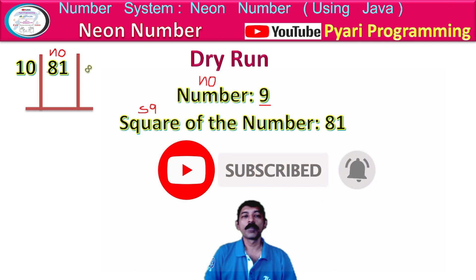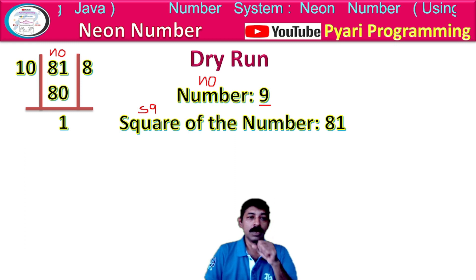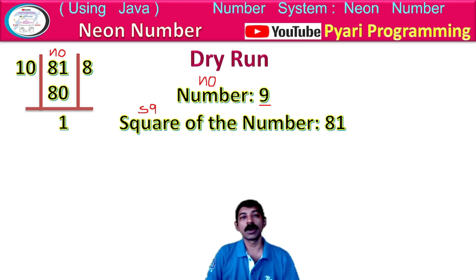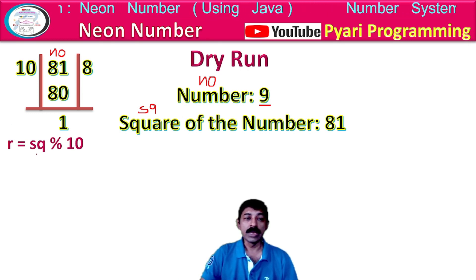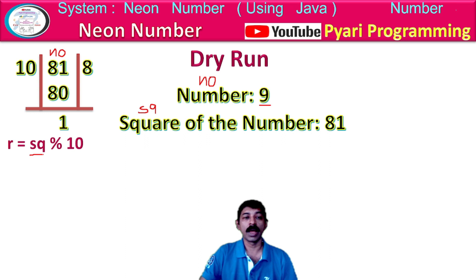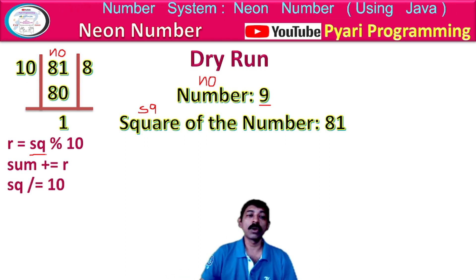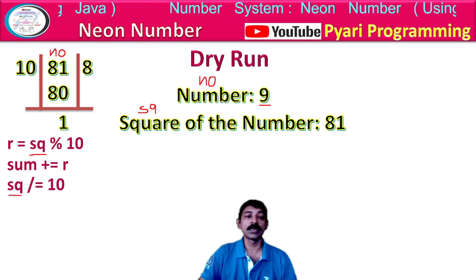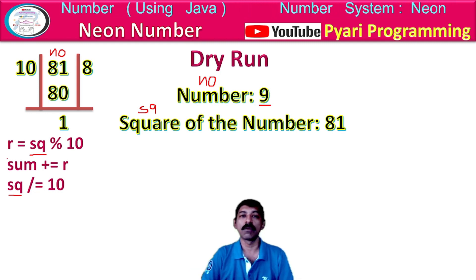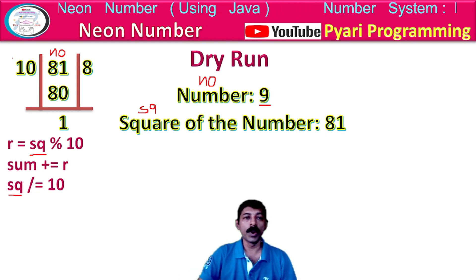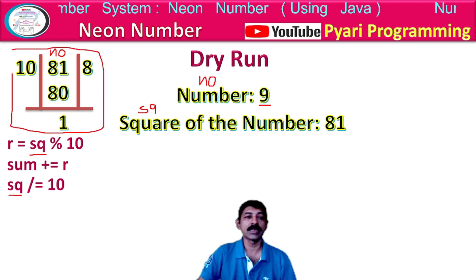Now I divide sq by 10. I get remainder 1 using: r = sq % 10. Then sum = sum + r, and sq = sq / 10. The sum is now 1 because remainder is 1 and sum was initially 0, so 0 + 1 = 1. Next, my number becomes 8. I divide by 10, remainder is 8, using the same statements. Now sum becomes 9 because earlier sum was 1 and remainder is 8, so 1 + 8 = 9. If you don't understand how these statements are converted, go to the number system playlist where five programs are explained clearly.